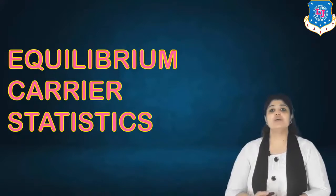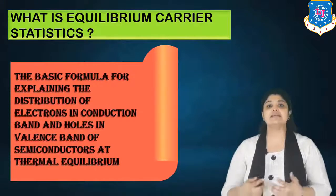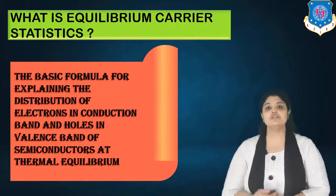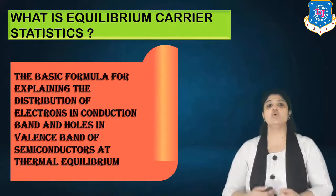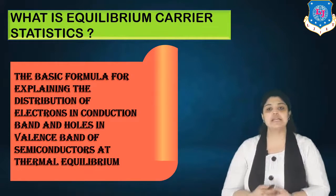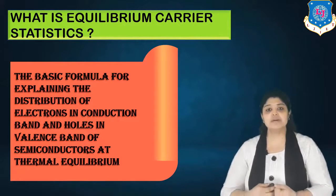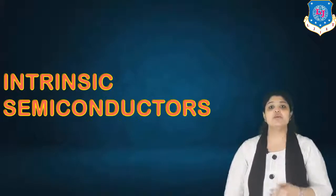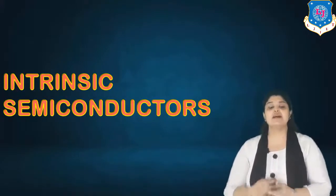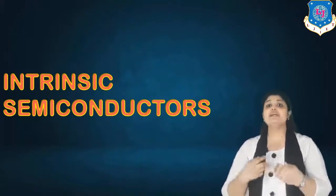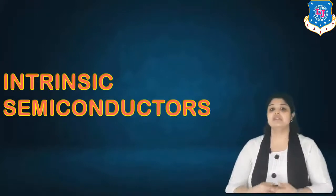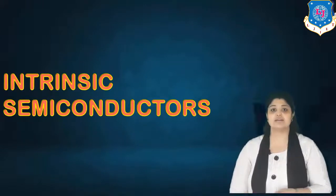We are also going to discuss Fermi level variation. Equilibrium carrier statistics is a basic formula which explains the distribution of electrons in the conduction band and holes in the valence band of semiconductors at thermal equilibrium. We will derive carrier statistics for intrinsic and extrinsic semiconductors separately. In today's video, I have covered intrinsic semiconductors first, so we will discuss how to derive carrier concentration with respect to intrinsic semiconductors.